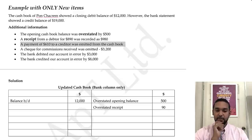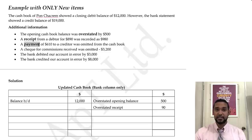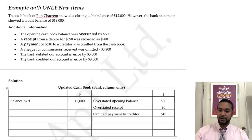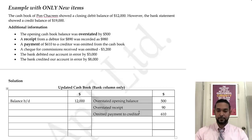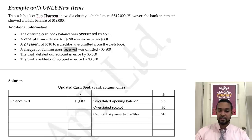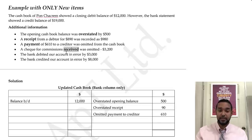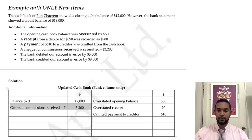A payment of $610 to a creditor was omitted from the cash book. A payment goes on the credit side, and if it was omitted it wasn't put in — so we go on the credit side and put $610. Next, a check for commissions received was omitted — $3,200. That's a receipt, so it goes on the debit side. If we didn't put it in, we put it in now — so we go on the debit side and put $3,200.